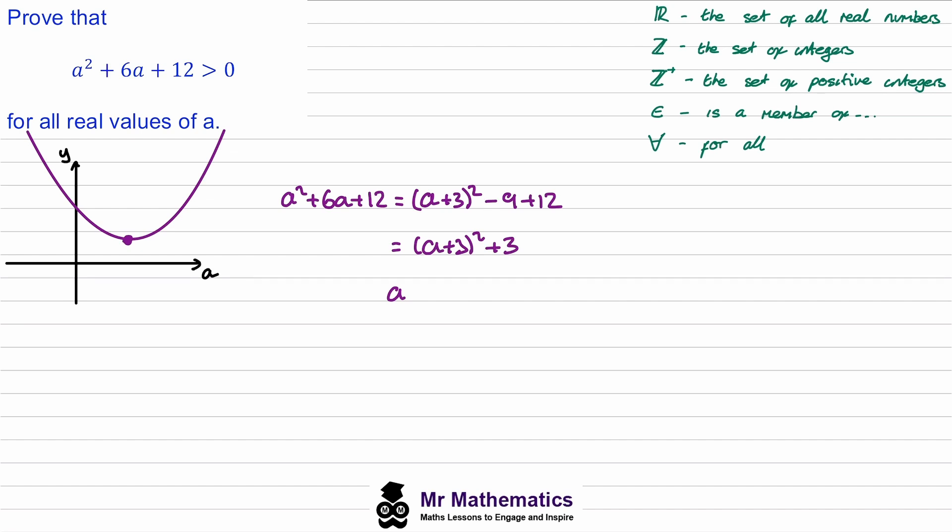Now we know that (a + 3)² must be greater than or equal to 0, because if a was negative, when you square it it would become positive. But let's say that a was equal to −3, you get −3 + 3 = 0, and 0 squared would be 0. This is why it's greater than or equal to 0.